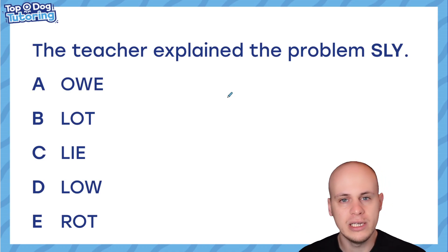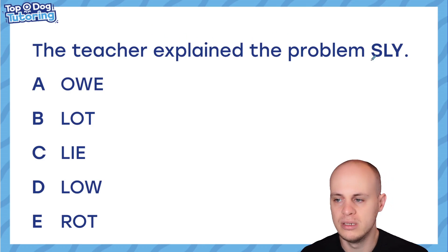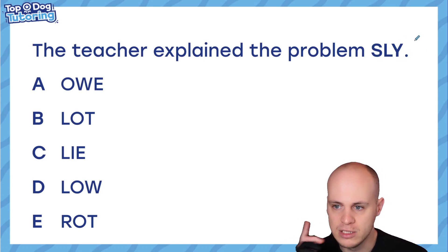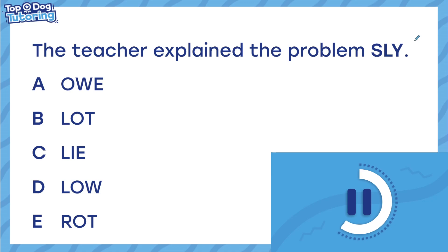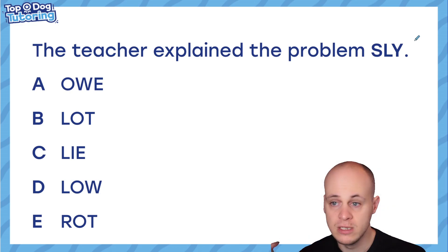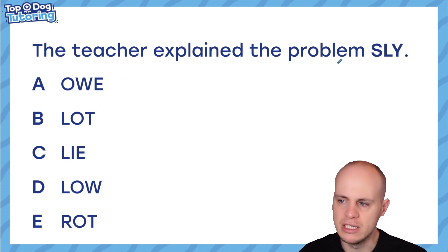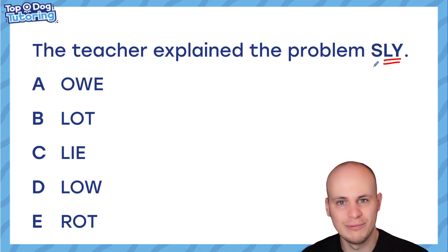So here's the next question. This time I'm going to read it to you and I want you to have a go. The sentence says: the teacher explained the problem — SLY. Well, that says SLY right now but we've got three letters missing. Use all the tips from the first one. O kind of makes me think of slowly — maybe that works. The teacher explained the problem slowly. Fantastic. The suffix L-Y is really common, words that end in L-Y.